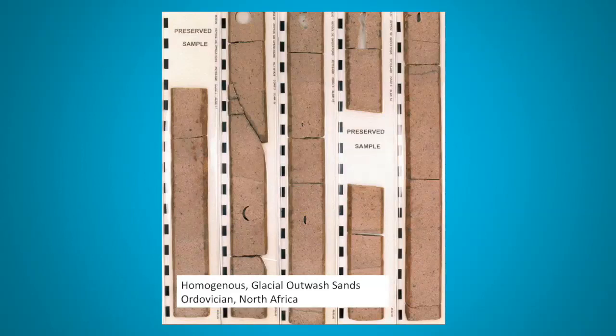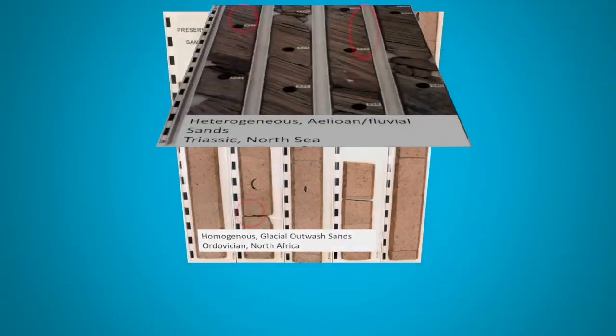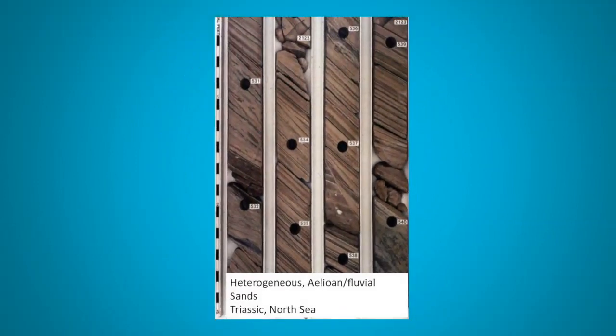The core has been slabbed and after the core plugs have been taken their locations are more obvious, the circular holes, partial holes and sometimes vertical holes. It is almost certainly going to be heterogeneous like this example.